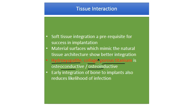These coatings not only signal for bone cells to infiltrate into the device but also conduct the formation of bone in and around the device. It is known that early integration of bone to prosthetic implants reduces the likelihood of infection. There are a number of prosthetic implants that use porous titanium — some have hydroxyapatite embedded on them, some are antibiotic loaded, and some have collagen coatings.